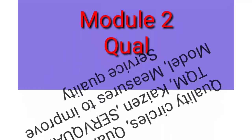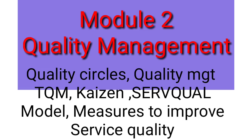If we talk about Module Number 2, it focuses on quality management. Quality circles is a very important point. Other key topics include: quality management, total quality management (TQM), kaizen, continuous improvement, SERVQUAL circle model — questions have been asked on these. Measures to improve service quality and dimensions of quality can also be asked. ISO is also a very important point in this module.